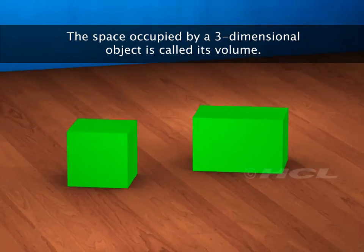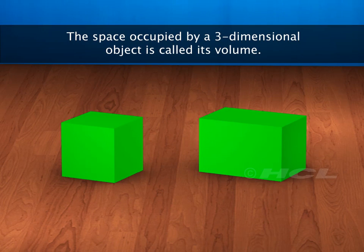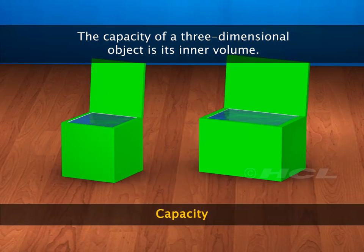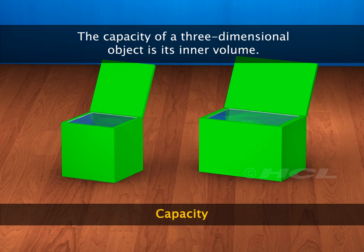The space occupied by a three-dimensional object is called its volume, whereas capacity of an object is the amount of substances such as air, liquid, or solid that it can hold.